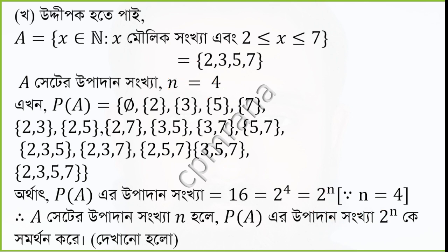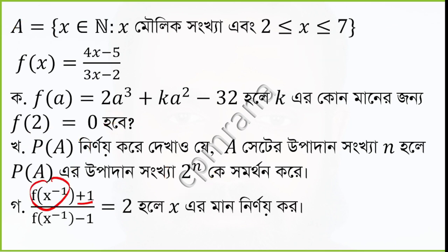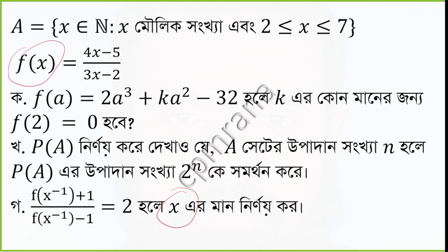How are you? Yes, sir. Okay. Let us see the question. Here is the question: f of x inverse plus 1 and f of x inverse minus 1 — is it equal to 2? If it is equal to 2, then x is equal to 1. Now, what are we going to do? If f of x is equal to (4x minus 5) by (3x minus 2).